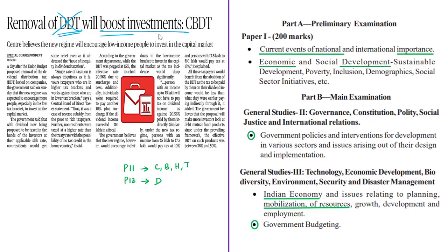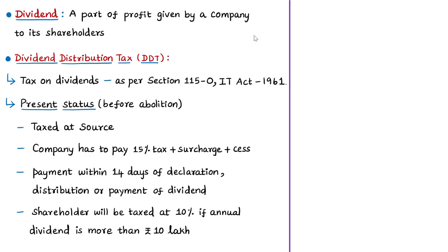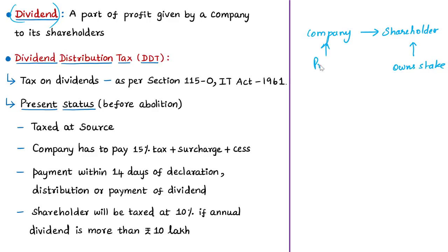We will discuss the dividend distribution tax and how its abolition will boost investments. A dividend is a payment made by a company to its shareholders. A shareholder owns a share or stake in a company, and when the company makes profits, part of it is distributed to shareholders as dividend. This regular payment made by a company to its shareholders is known as dividend.